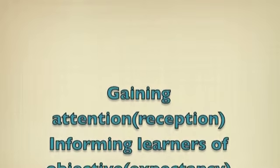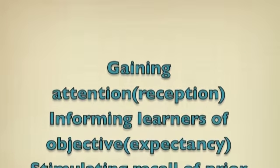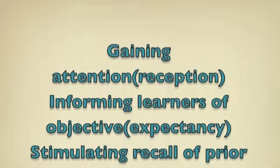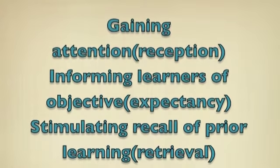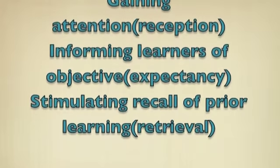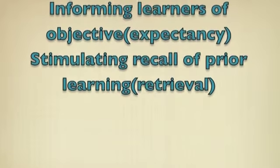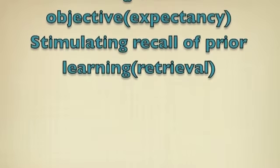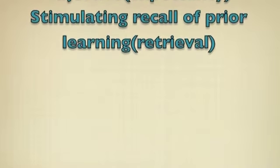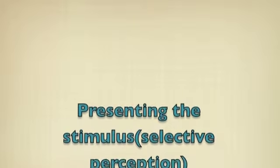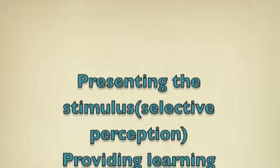The first instructional event is gaining attention, and the corresponding cognitive process is reception. The second is informing learners of an objective, and the cognitive process is expectancy. The third is stimulating recall of prior learning, and the corresponding cognitive process is retrieval. The fourth is presenting the stimulus, and the corresponding cognitive process is selective perception.